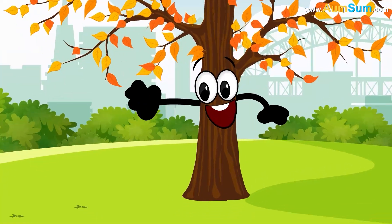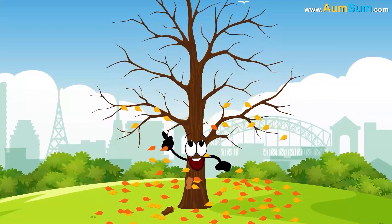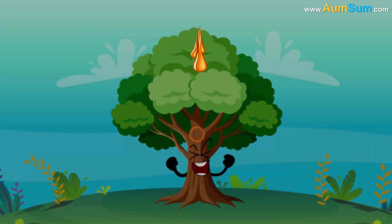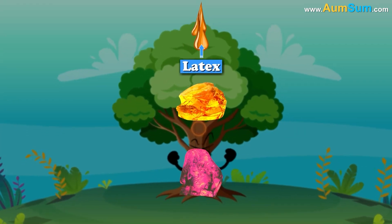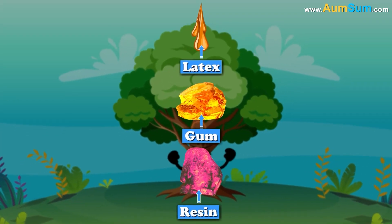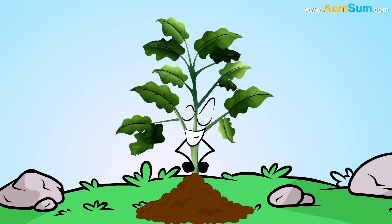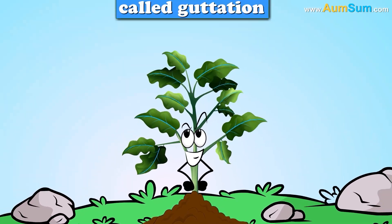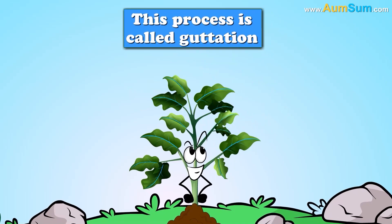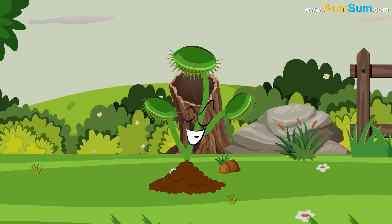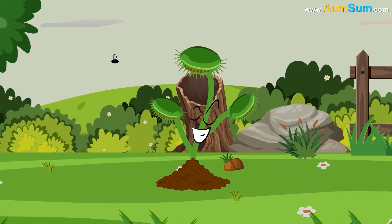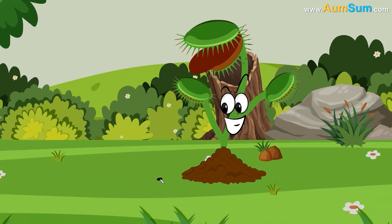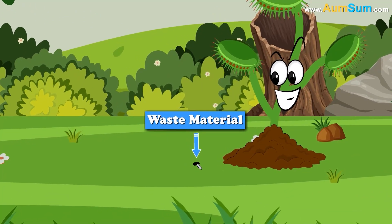How does a plant poop? Firstly, some plants get rid of their waste material by peeling off their bark as well as by shedding their leaves. Secondly, some plants get rid of waste in the form of secretions such as latex, gum, resin, etc. Thirdly, some plants remove excess water through tiny pores on the margins of their leaves — a process called guttation. Lastly, carnivorous plants like the Venus flytrap catch insects, extract their juices, and then open up, allowing the waste material to fall off.